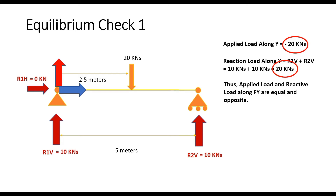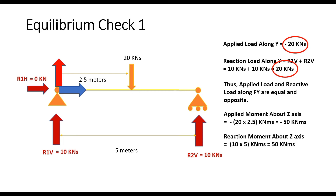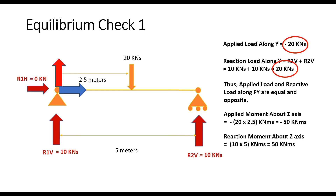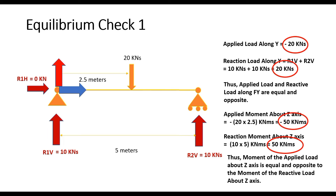Considering the Mz values: the reaction moment about the Z axis is R2V × 5 meters = 10 × 5 = 50 kNm, which is positive (anti-clockwise by the right-hand thumb rule). R1V has a lever arm of zero and contributes no moment. The applied moment is −20 × 2.5 = minus 50 kNm, negative because it rotates clockwise. So the applied moment is minus 50 kNm and the reaction moment is plus 50 kNm — they are equal and opposite, and the equilibrium condition is satisfied.